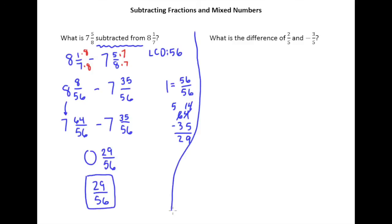Next one says, what is the difference of 2/5 and negative 3/5? Remember, this is where you keep the order they write it in. So we're simply going to say 2/5 minus, and then this is negative 3/5. We better put parentheses here.